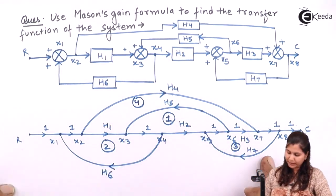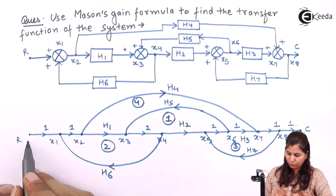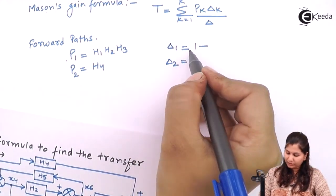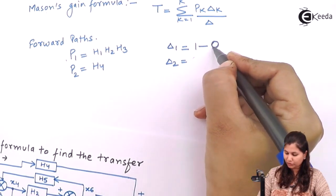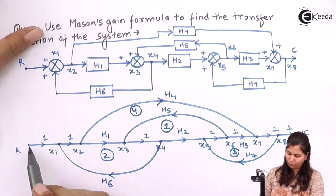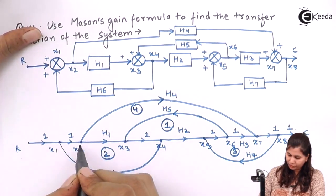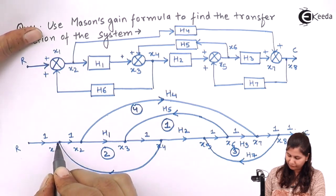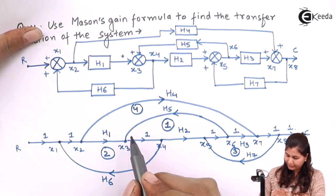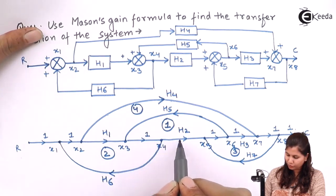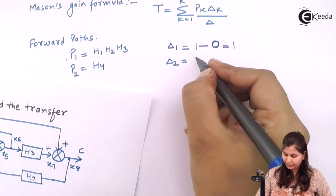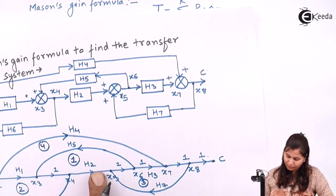For Delta 1: our forward path P1 is the straight-line path and all loops touch it, so there are no non-touching loops. Therefore Delta 1 equals 1. For Delta 2: the forward path P2 has loop 1 (X3, X4, X5, X6) not touching it, so Delta 2 equals 1 minus H2·H5.